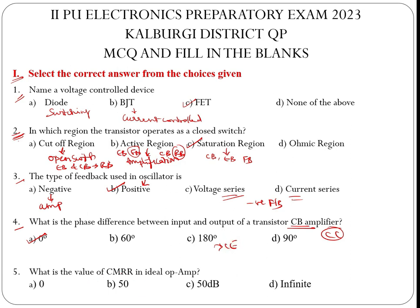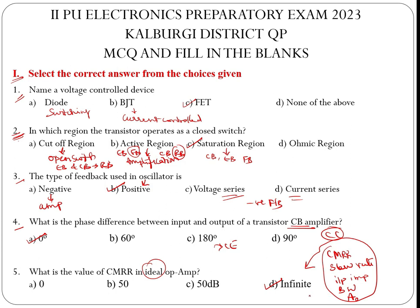What is the value of CMRR in an ideal op-amp? When we say ideal, certain parameters are infinite — that is CMRR, slew rate, input impedance, bandwidth, and open loop gain. All these five ideally have infinite value. So any question they ask on this, you can write this. The other parameters are 0 ideally.